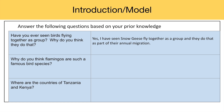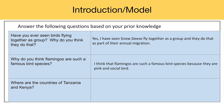Next question: Why do you think flamingos are such a famous bird species? I think flamingos are such a famous bird species because they are pink and social birds. Last question: Where are the countries of Tanzania and Kenya? The countries of Tanzania and Kenya are located in Africa.